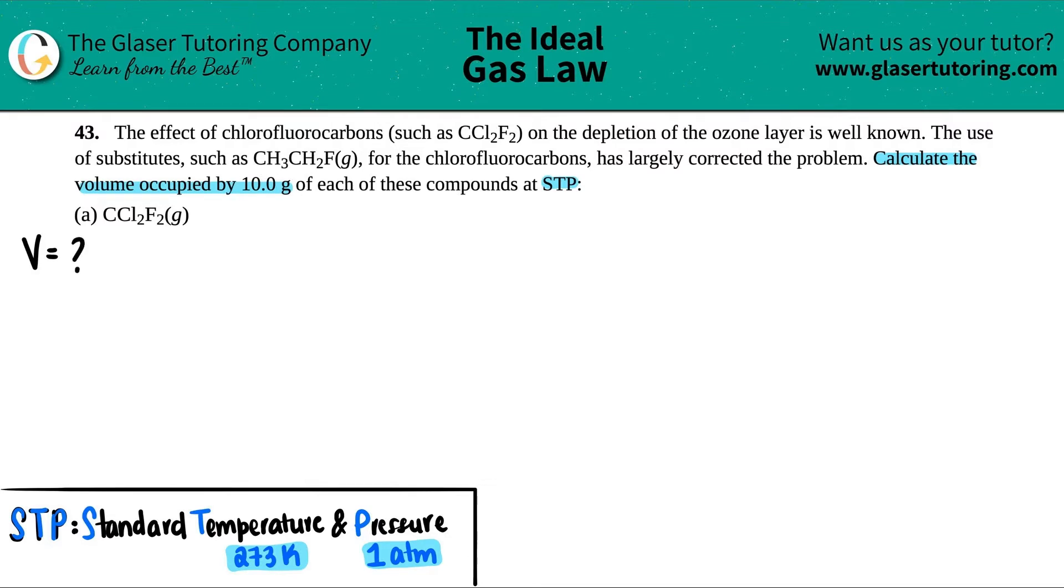They gave me the mass of 10.0 grams of CCl2F2. STP is basically hidden information for temperature and pressure. STP means standard temperature and pressure, which is always 273 Kelvin and one atm. So by them saying STP, you know that you have a temperature of 273 Kelvin and a pressure of one atm.